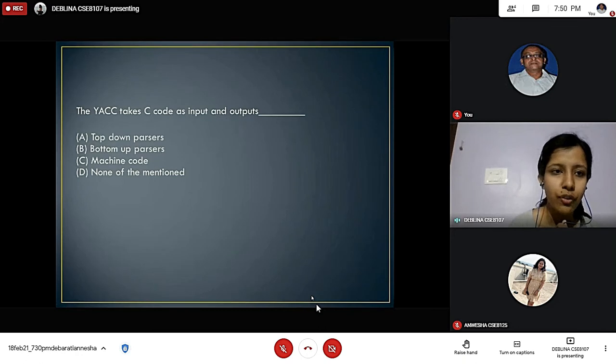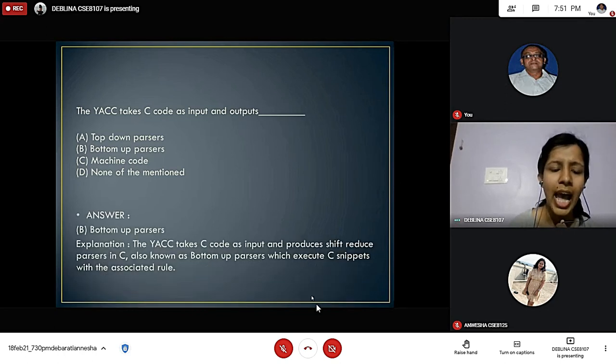Now we move to the fourth question. YAC takes C code as input and outputs what? Option A: Top down parsers. Option B: Bottom up parsers. Option C: Machine code. Option D: None of the mentioned. The answer is option B, bottom up parsers. The explanation being YAC takes C code as input and produces shift reduce parsers in C, also known as bottom up parsers, which execute C snippets with the associated rule.